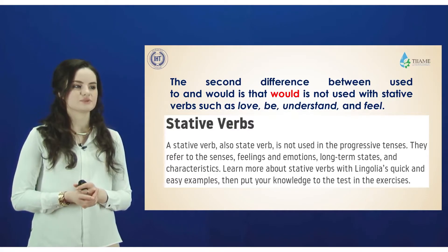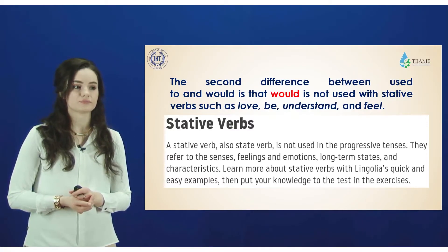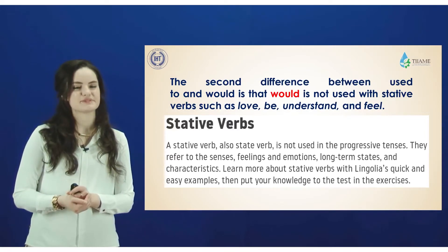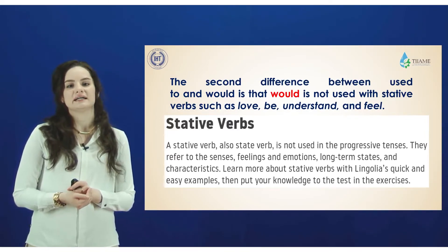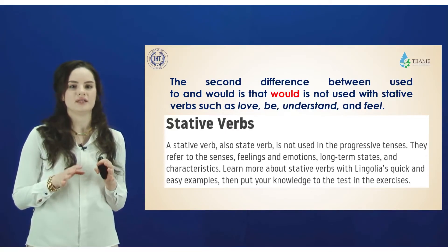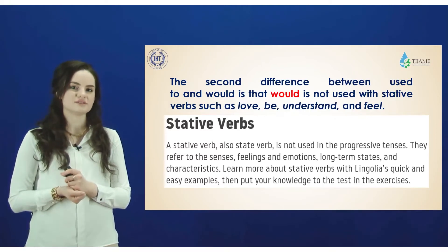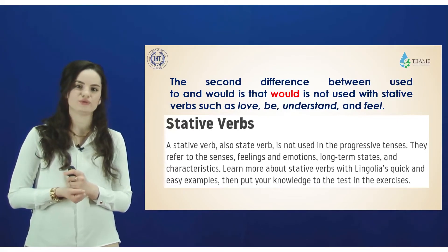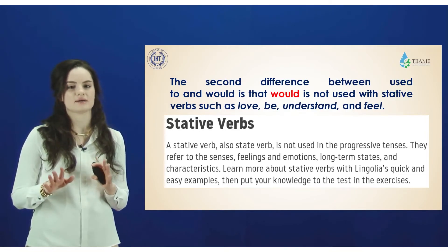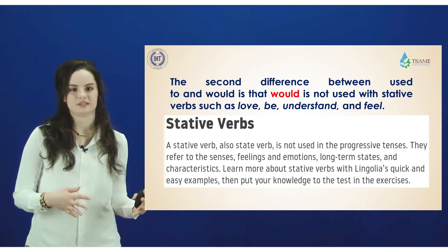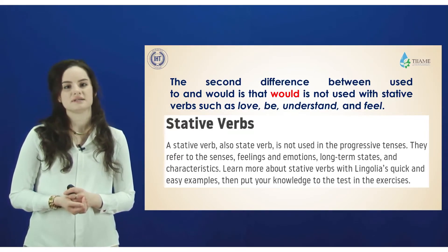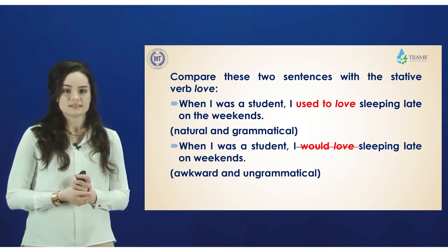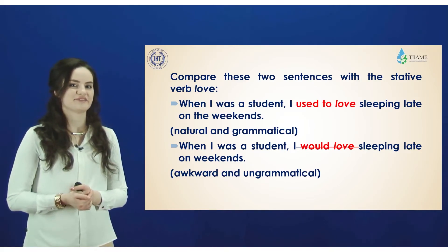The second difference between used to and would concerns stative verbs. What are stative verbs? Stative verbs are used in situations which are not in progress. This means they cannot be used in progressive tenses such as present continuous, past continuous, or future continuous — only in simple or resultative tenses. Please remember this, or your sentences will be illogical. Now compare these example sentences — according to them, you can understand this topic much better.